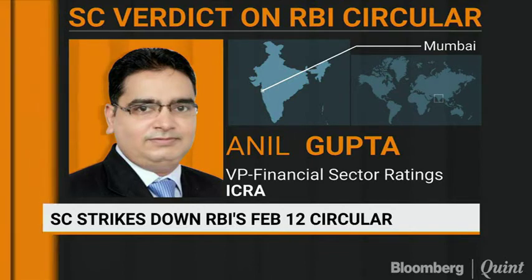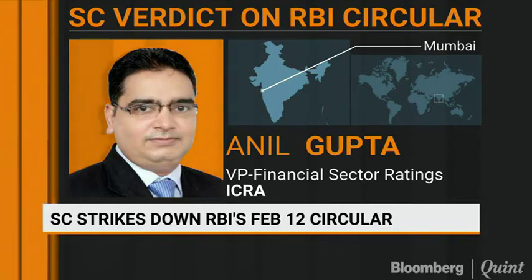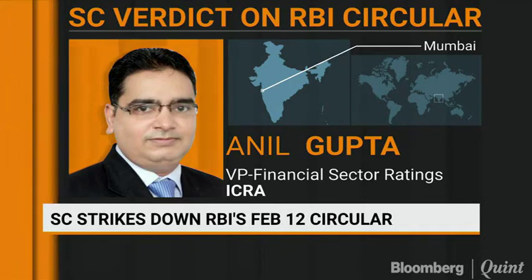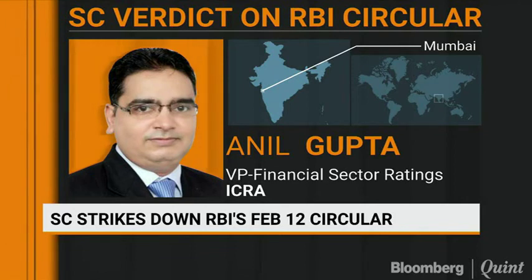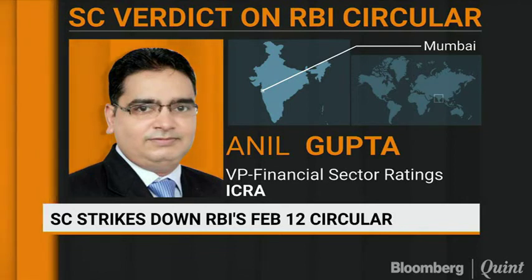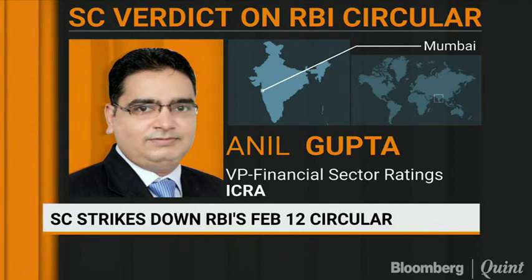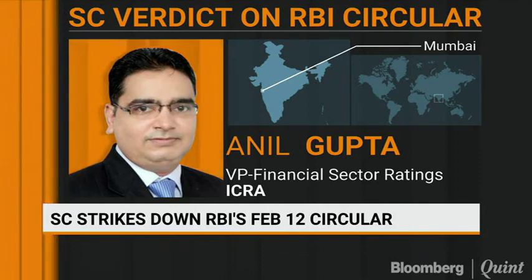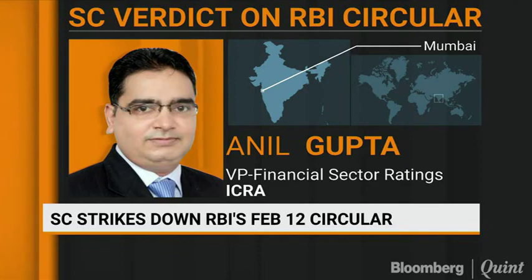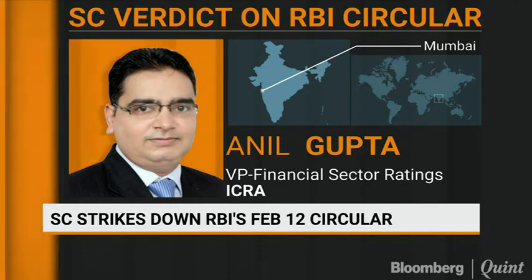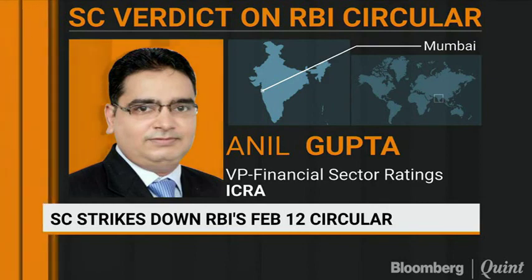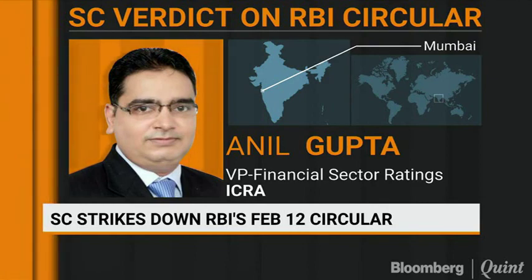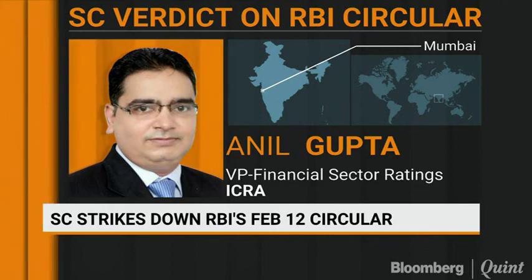Even for the NCLT 2 cases, there were no explicit directions from RBI to make 50% provisions. But because recovery expectations are low, plus time-bound aging provisions have happened, most banks are above 50% even on NCLT 2. For the February 12th accounts, the banks will possibly be lower than 50% provisioning. There is no minimum requirement of provisions specified by RBI except for whatever is coming because of aging, which will be not more than 25 to 30% based on the aging. If some banks have voluntarily done higher provisioning, then that could be there.